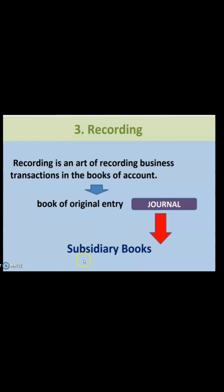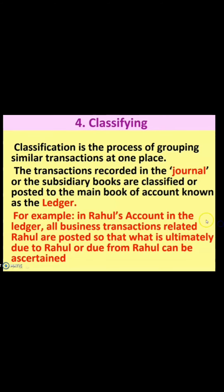So we have journal and subsidiary books. After recording the transactions, we will classify them according to their common nature. Classification is a process of grouping similar transactions at one place — all the similar transactions will be recorded in one place. The transactions recorded in the journal or the subsidiary books are classified or posted to the main book of account known as the ledger.